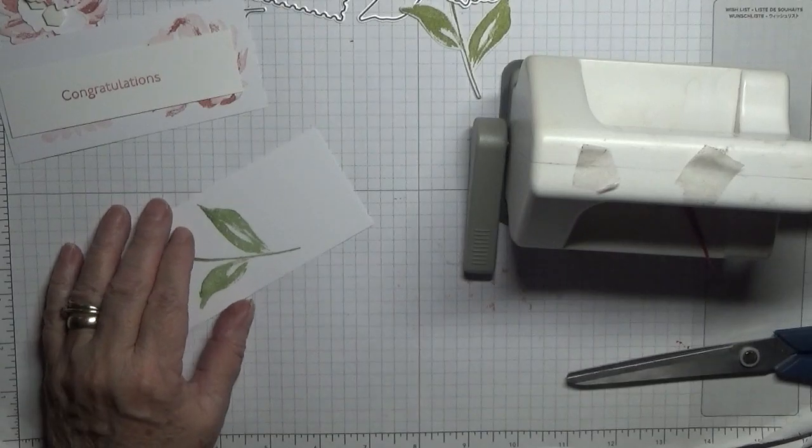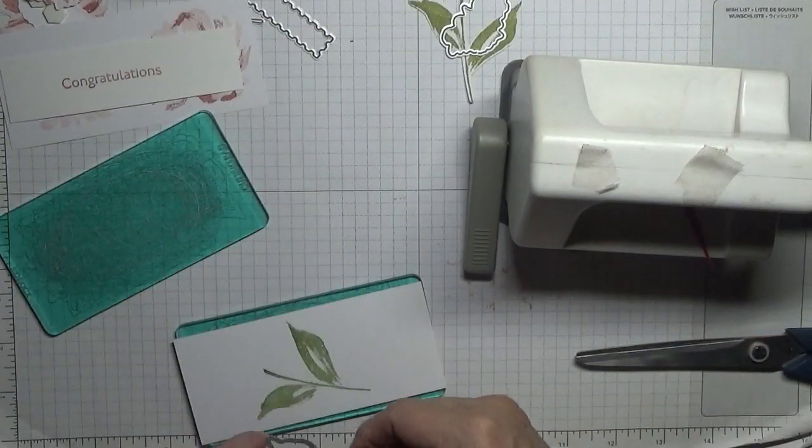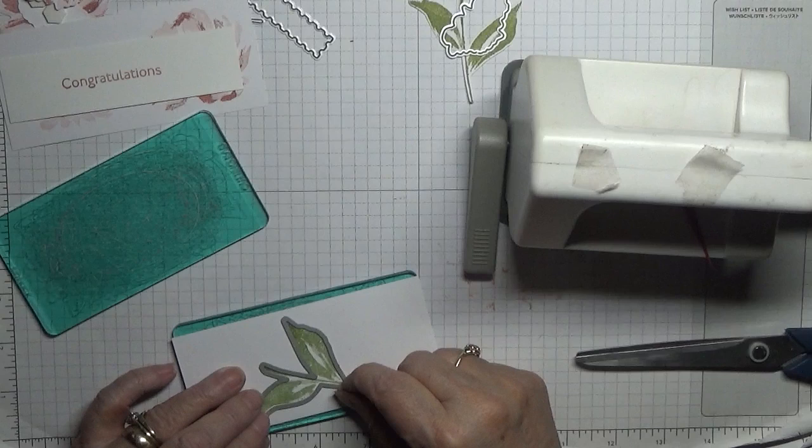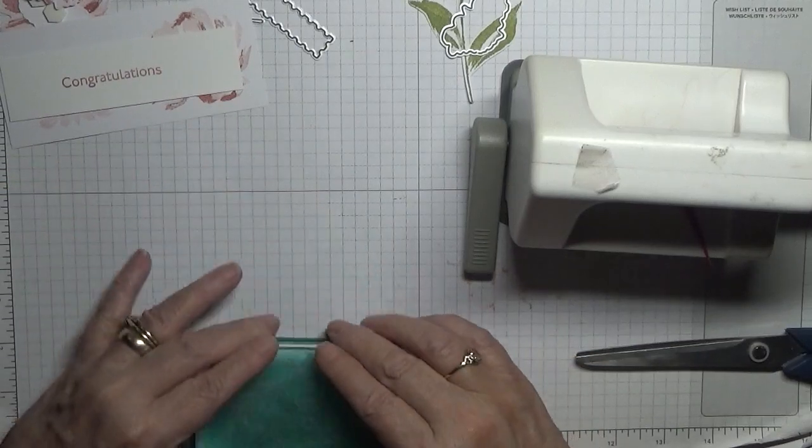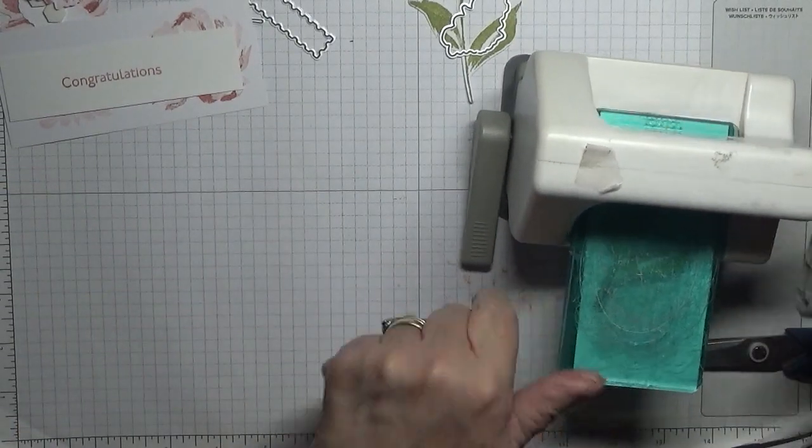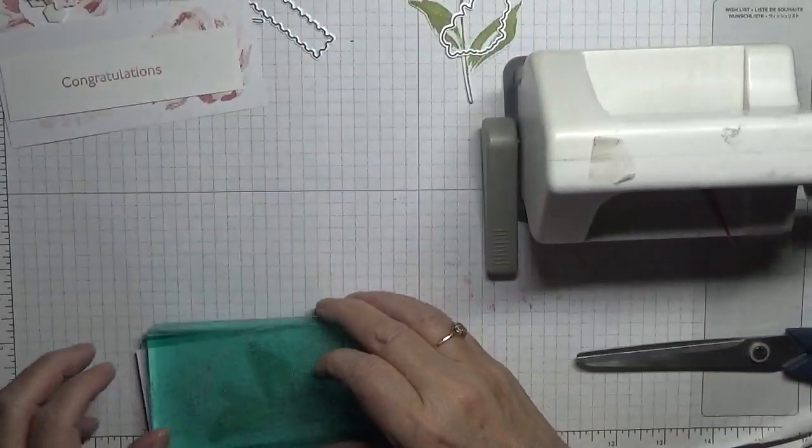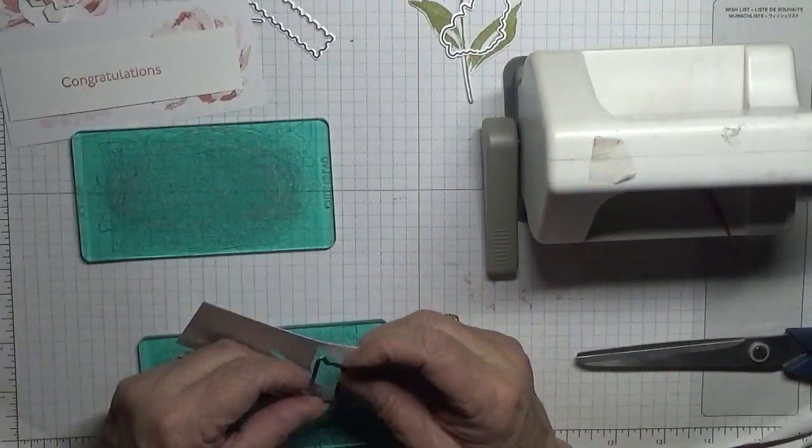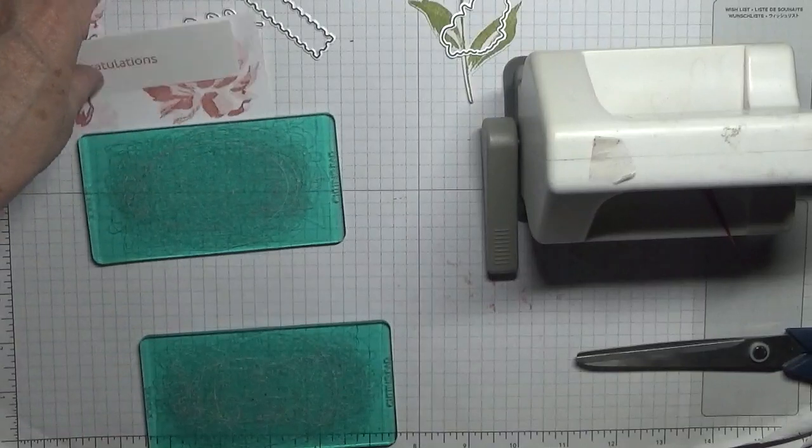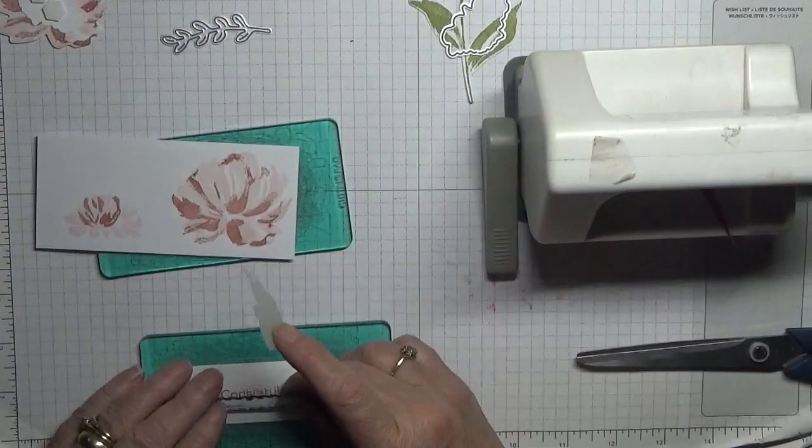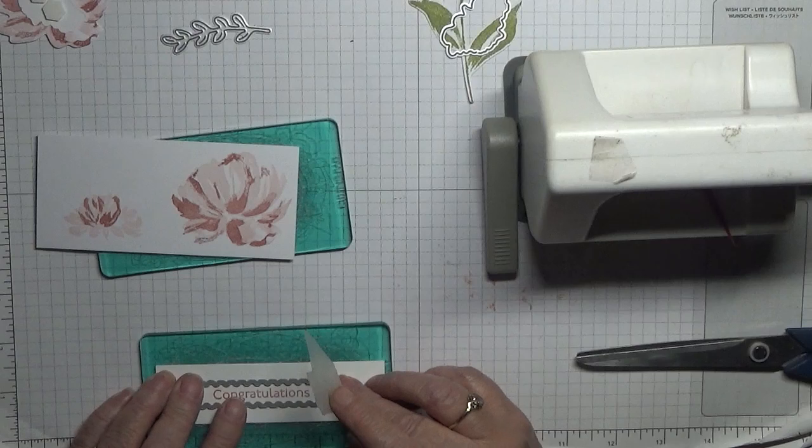Bring my scissors in. Do I need my scissors? No, not for this one. Place the die on, bit of tape to keep it down, and run it through. I need my scissors though, so I'll do this next. Cut it out.